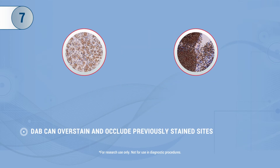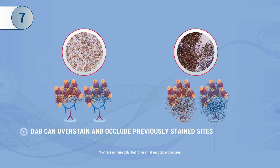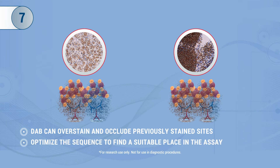Tip 7: Although DAB is the commonly used chromogen for single-stained IHC, it is an example of a chromogen that can occlude spatially close targets and overstain previously labeled sites. If using DAB, optimize the sequence in which it is used to find a suitable place within the assay.